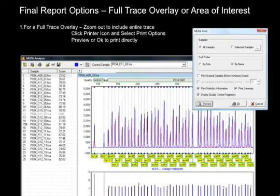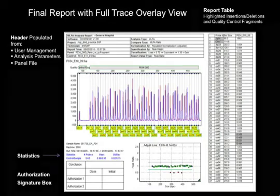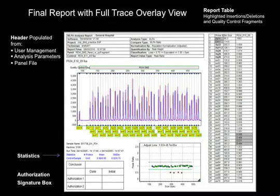Display quality control fragments will list and highlight the quality control fragments in the report table. The final report includes a header, trace overlay, report table, sample statistics, peak ratio plot, and a conclusion footer for authorization date and initials. The header obtains institution name and technician from the user management, and all other information from the project settings used in the analysis of the data.